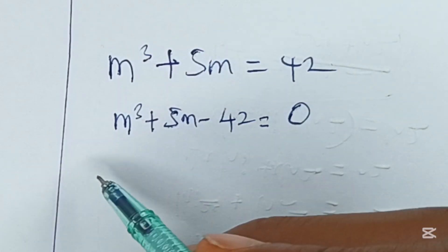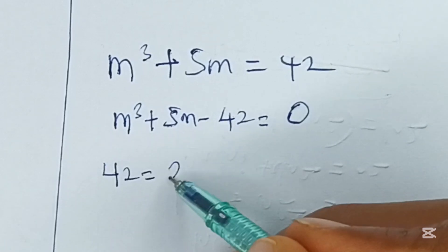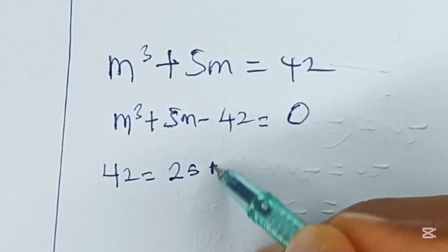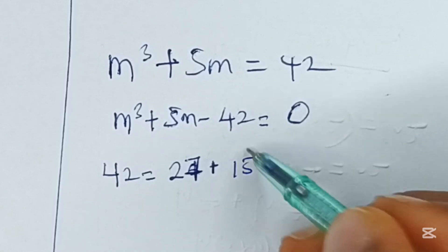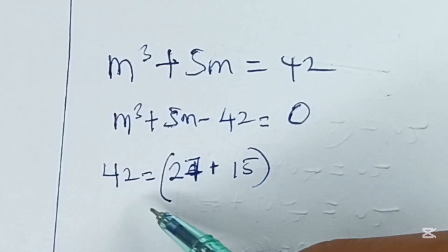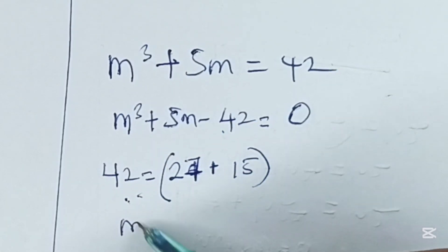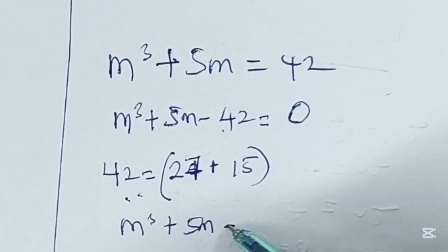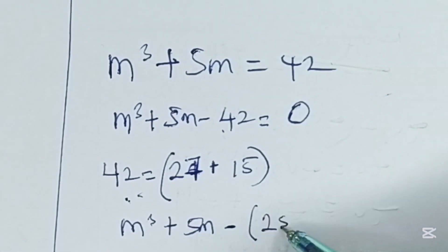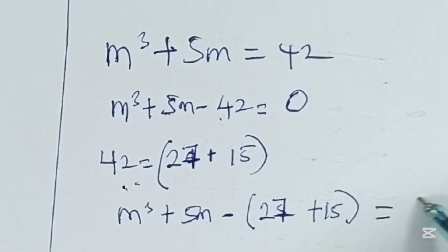Moving on from here, we can say that 42 is equal to 27 plus 15. Now we'll observe 42 is 27 plus 15 here. So we have m cubed plus 5m minus 27 plus 15 is equal to 0.